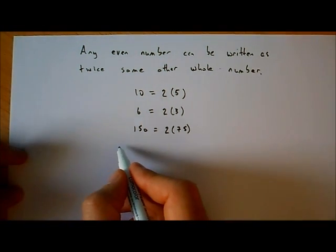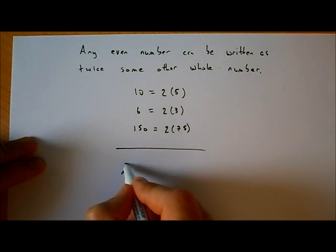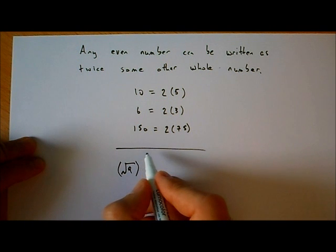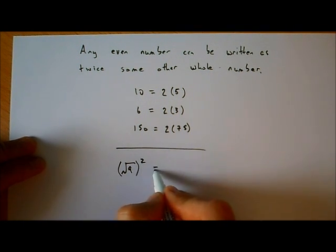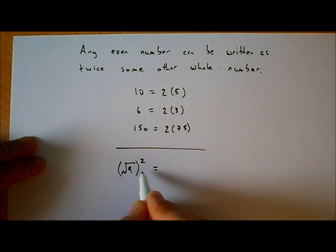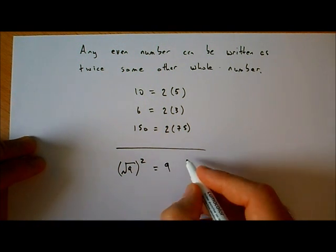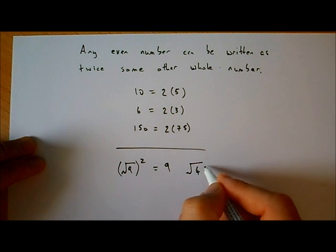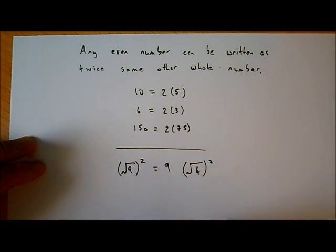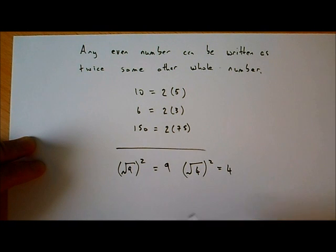Another thing we're going to use in the proof is the fact that if you take a square root and square it, you get what's inside the square root. For example, the square root of 9 squared is equal to 9. Or the square root of 4 squared is 4.